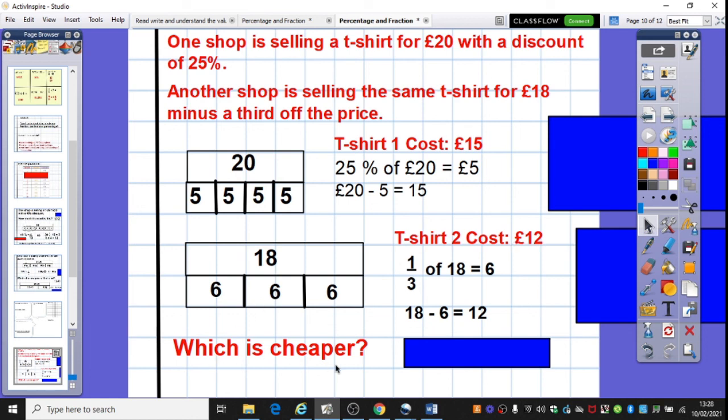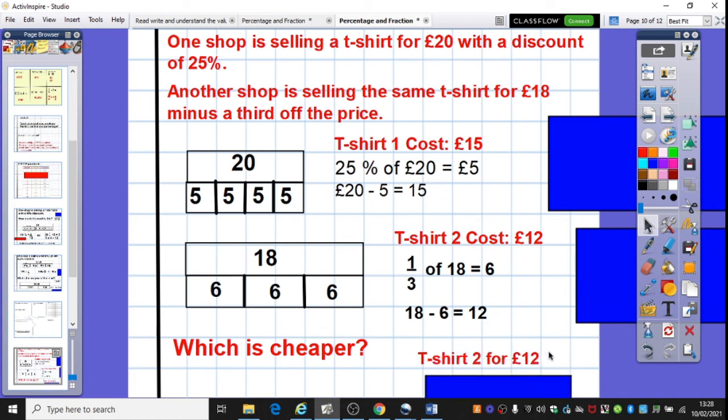The question then says, which is cheaper? Oh, well I've shown all my workings. The answer is t-shirt 2. Because t-shirt 2 is only £12 and t-shirt 1 is £15.